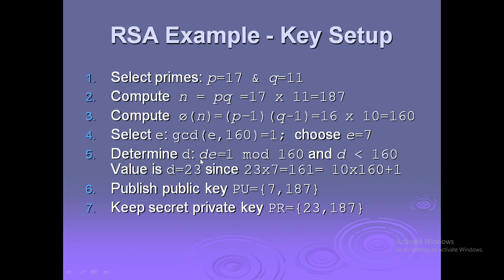Determine d such that d·e ≡ 1 mod 160, with d < 160. The value of d is 23, since 23 × 7 = 161 = 1 × 160 + 1. So d = 23. Publish the public key {e, n} = {7, 187} and keep the private key {d, n} = {23, 187}.